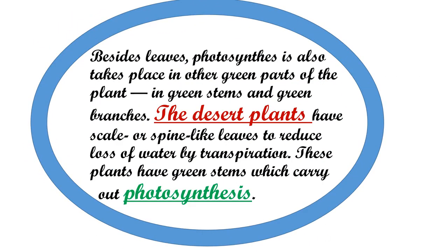You know, besides leaves, photosynthesis also takes place in other green parts of the plant, in green stems and green branches. The desert plants have scale or spine-like leaves to reduce loss of water by transpiration. These plants have green stems, which carry out photosynthesis.